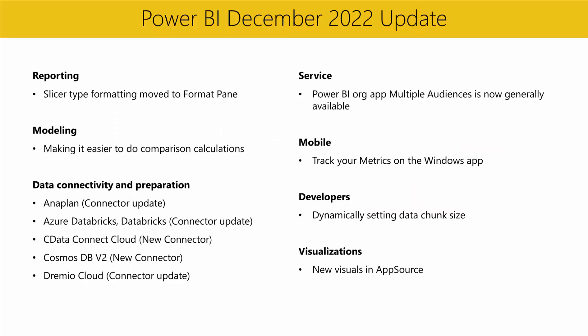First, in the reporting section, we've moved slicer type formatting into the format pane. Previously, to change a slicer's type, like changing from relative date to a slider, these settings were only available in the visual header and you could only find them on hover.